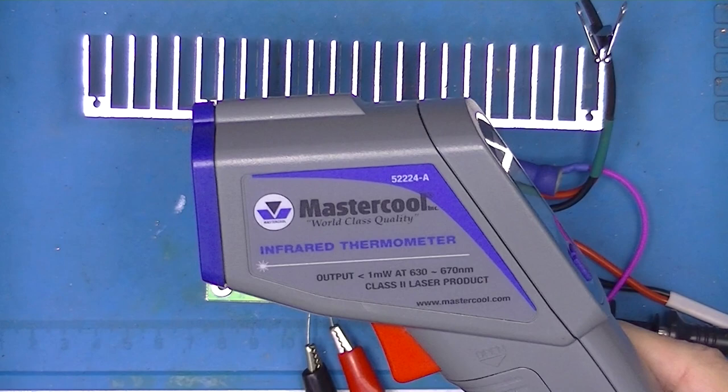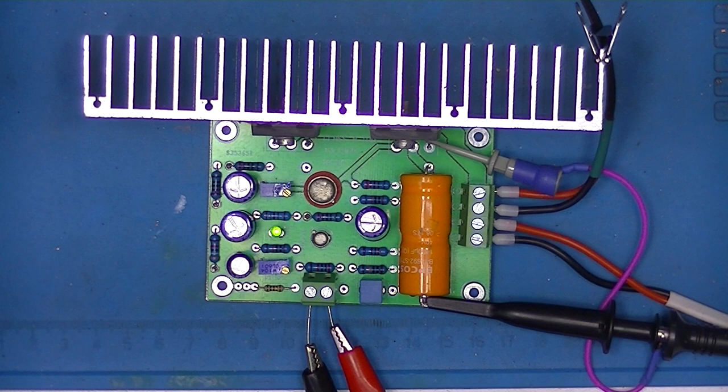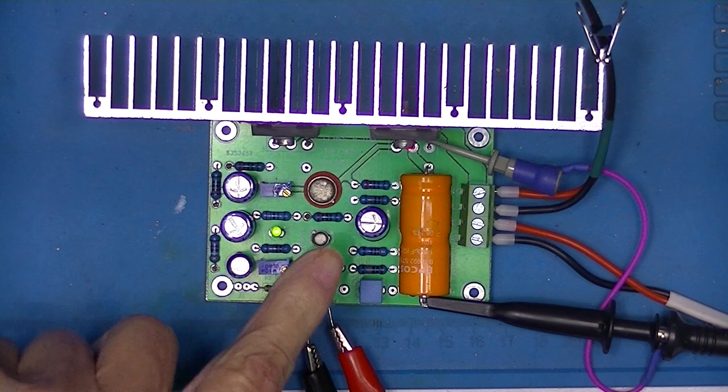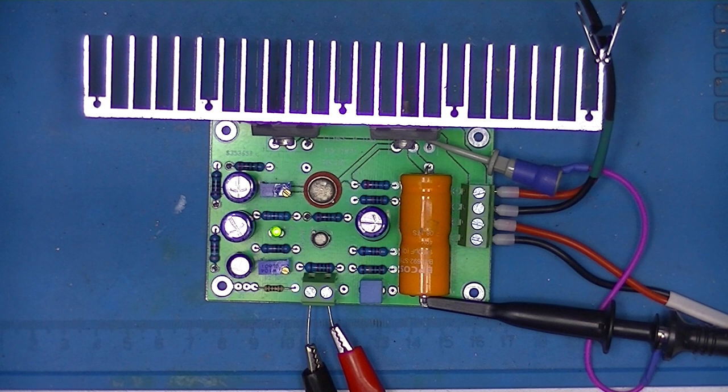I have an infrared thermometer. The heat sink in Fahrenheit is around 80. Looking at the terminals. Looking at the mounting screw of the three terminals device. It appears to be about 90 Fahrenheit.